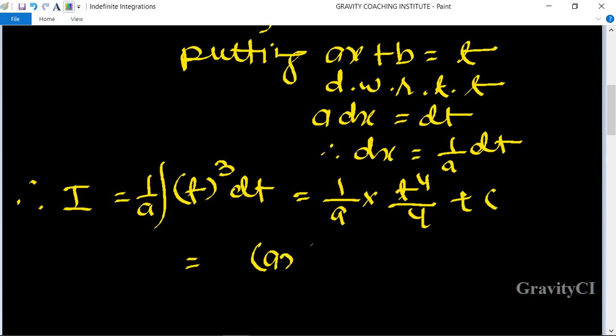value of t: (ax + b)⁴ upon 4a + C, which is the required answer.